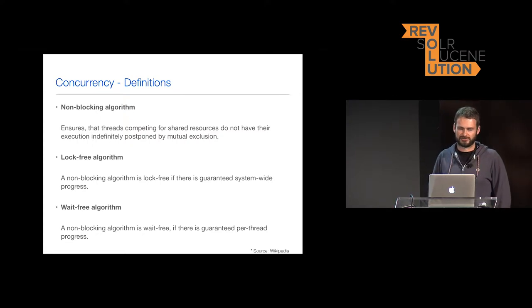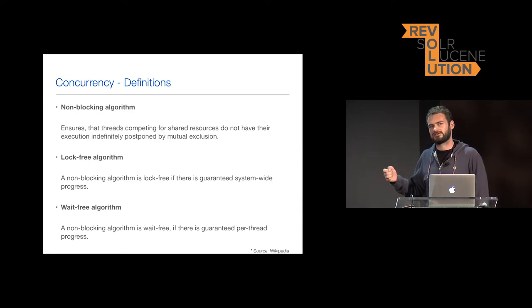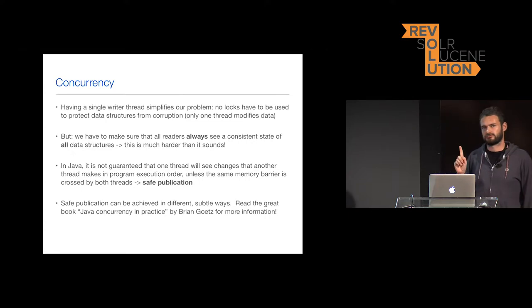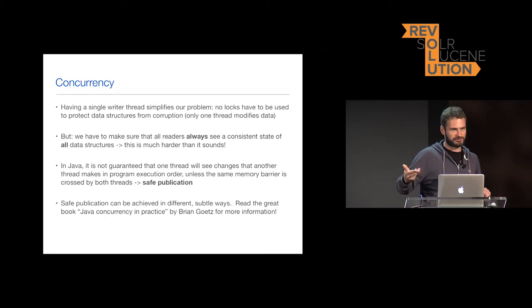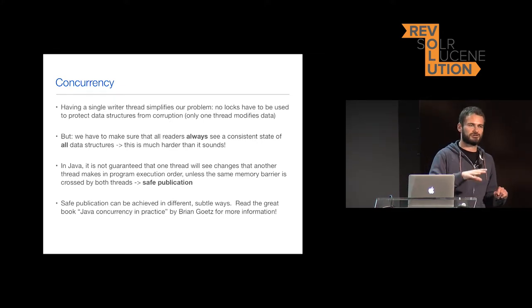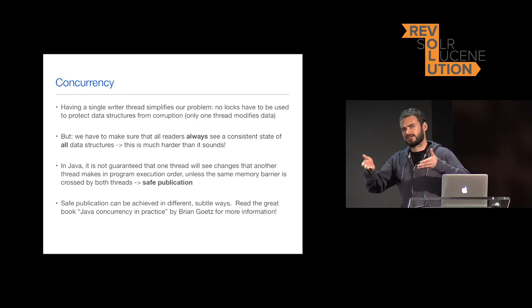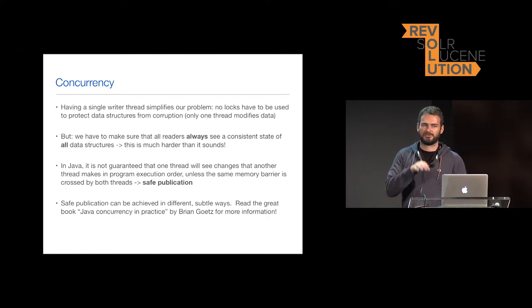Non-blocking algorithms don't produce deadlocks — the whole system always makes progress. A lock-free algorithm guarantees system-wide progress. A wait-free algorithm means every thread can make progress at any time. In our system we always have a single writer thread per segment, which makes things easier since we don't have to worry about two writer threads corrupting the same data structure. We have many reader threads serving queries, and we need to ensure readers always see a consistent snapshot of what the writer produced.